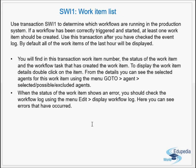The last transaction discussed in this video is SWI1. The previous transactions were administrative T-codes; SWI1 is more of a monitoring T-code — the Work Item List. Use SWI1 to determine which workflows are running in the production system. If a workflow has been correctly triggered and started, at least one work item should be created. Use this transaction after you have checked the event log.